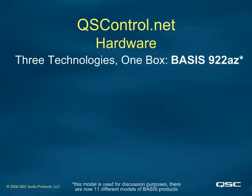Let's discuss the hardware aspects of QuesControl.net. It consists of three different technologies rolled into one package called BASIS. For this discussion and presentation, we'll use the BASIS 922AZ, since it has all of the features of the product line. Additionally, the 922AZ was the first of this product series, but now there are 11 different models in production.